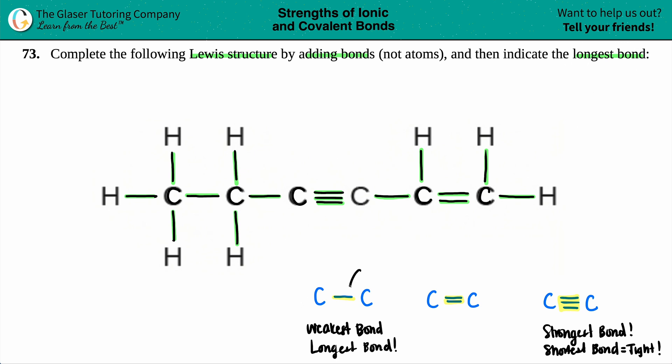Since we want to find the longest bond, we're looking for those C single bonds. It's not the triple bond—the triple bond actually would be the shortest bond because it's the strongest. It's not the double bond. It's one of these single bonds. But which one is it, C-H or C-C? This comes from atomic radius.